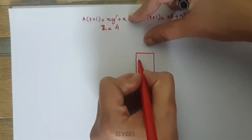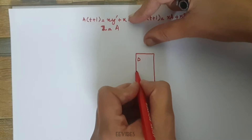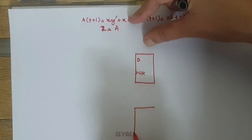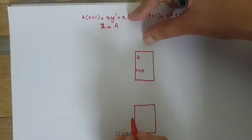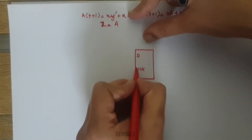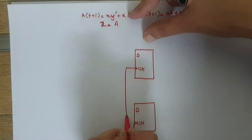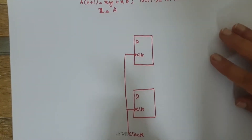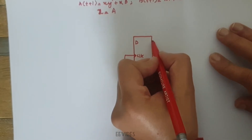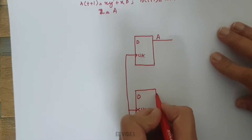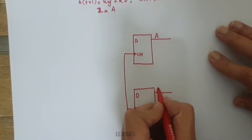This is my first D type flip-flop, and here will be the clock signal. Similarly, here is the second D type flip-flop and its clock signal. Let's combine these two clock signals and represent them with a single clock.